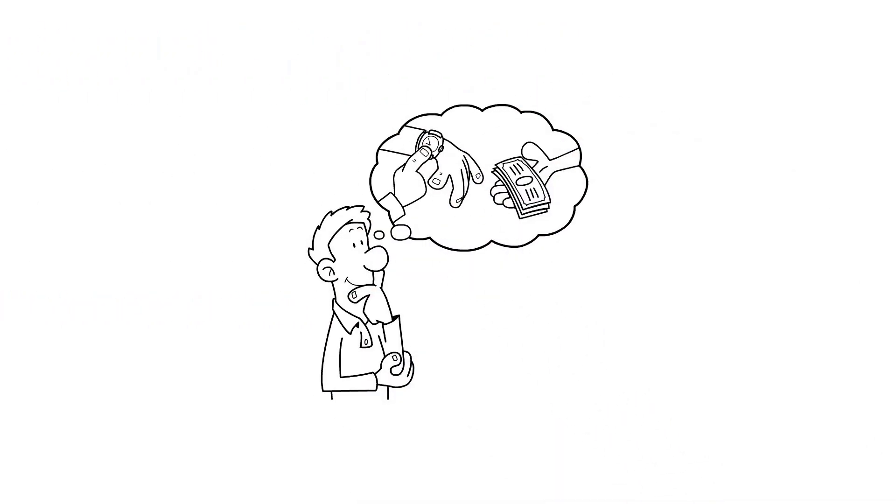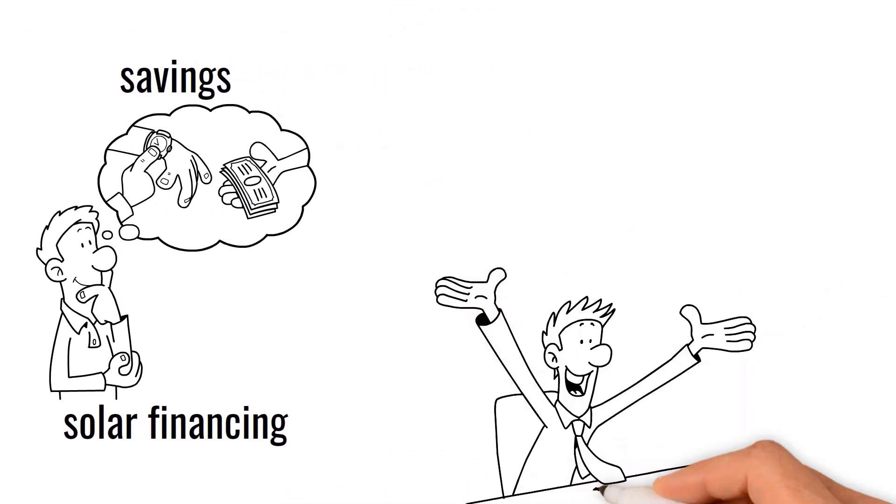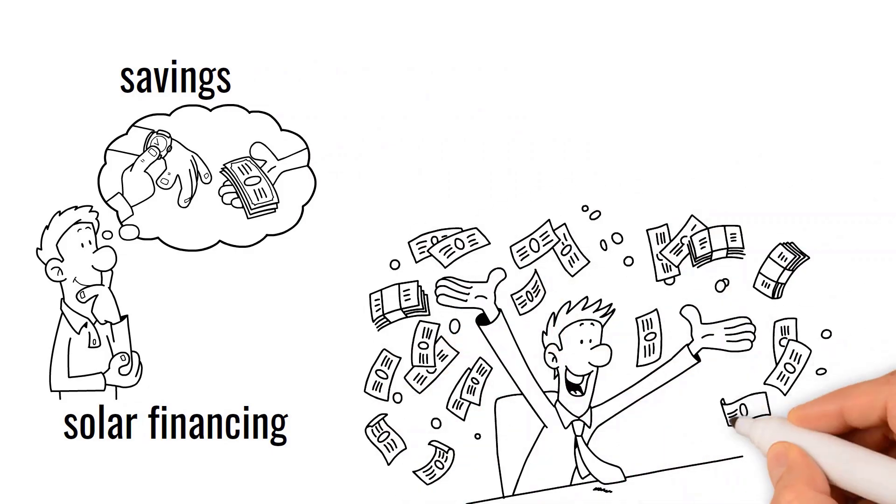Bob now has a choice: he can put his refund into savings, pay it into his solar financing, or spend it anyway he likes. Bob is thrilled with his decision to go solar and he's happy to have a second bucket to pay his taxes with.